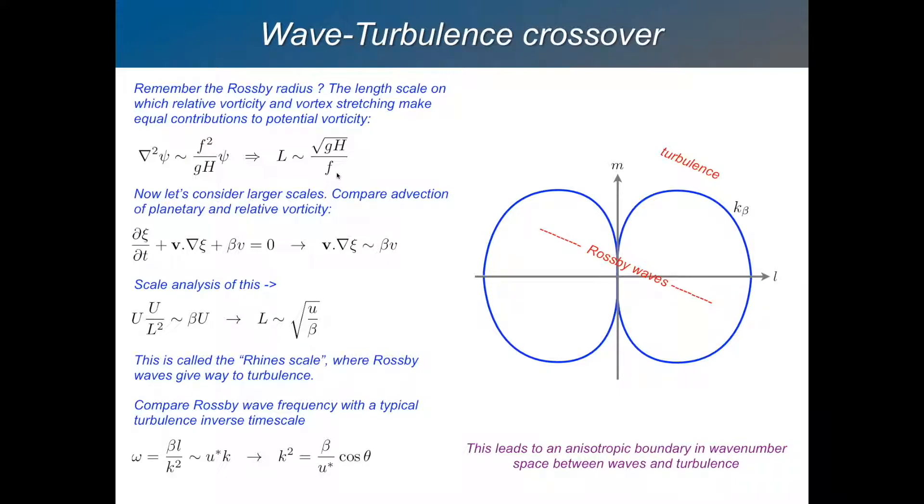Now let's think of another length scale. We'll use the vorticity equation for this length scale. Here's the vorticity equation: d by dt of relative vorticity is the advection of relative vorticity and the advection of planetary vorticity. What if those two terms are of similar magnitude? A scale analysis gives a length scale of the square root of u over beta, where u is the flow speed.